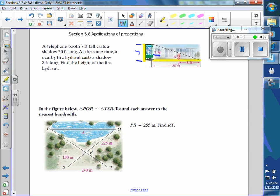At the same time, a nearby fire hydrant, so that's right here, the fire hydrant. It casts a shadow, which would be right here. That's 8 feet long. And your goal is to find H, the height of the fire hydrant.